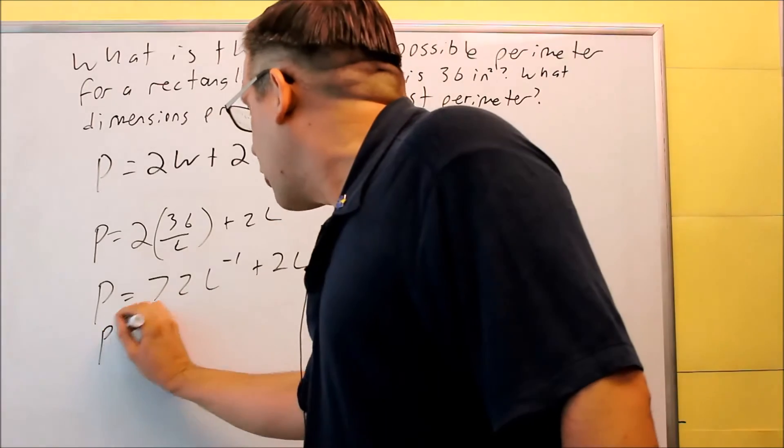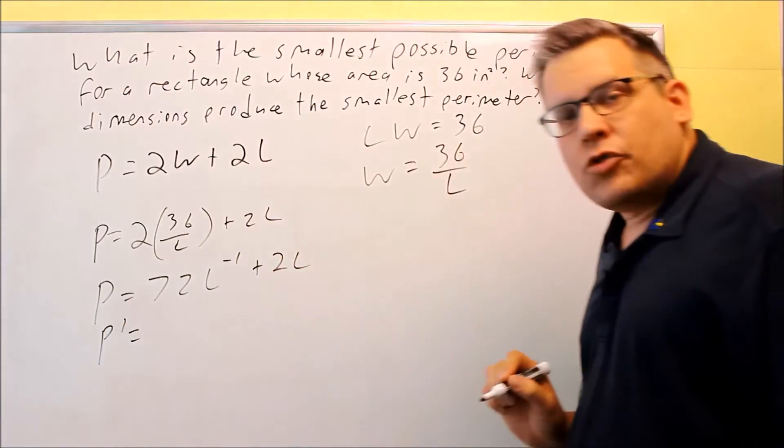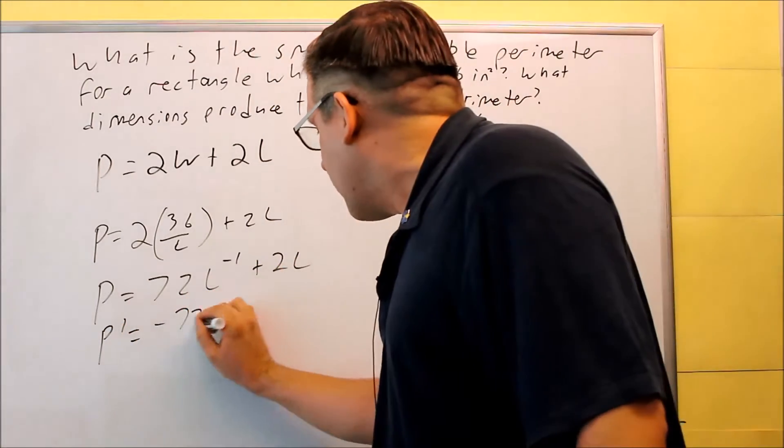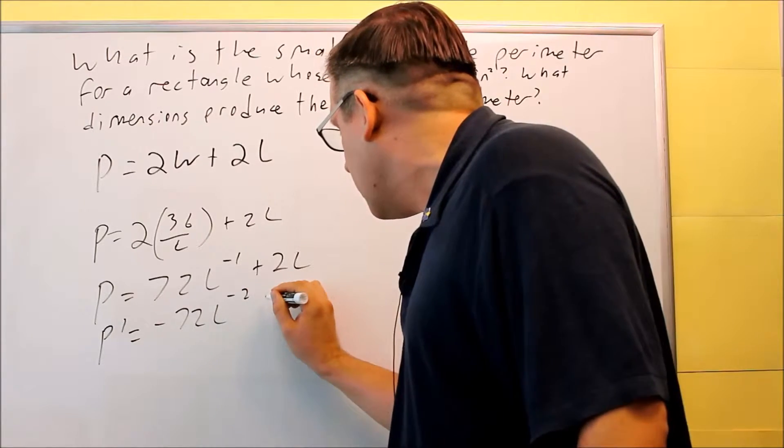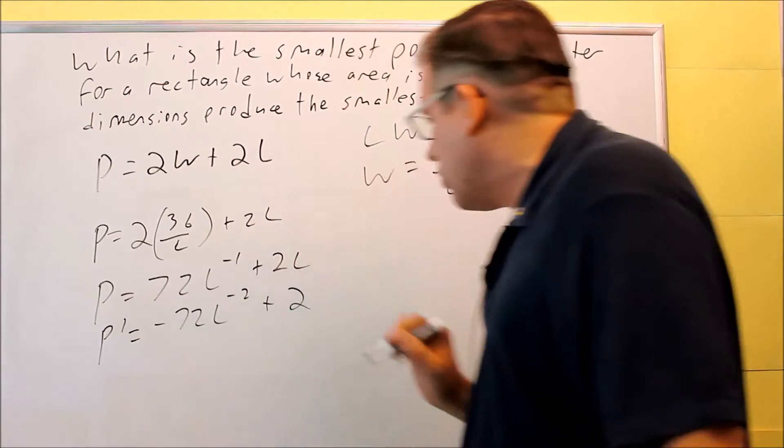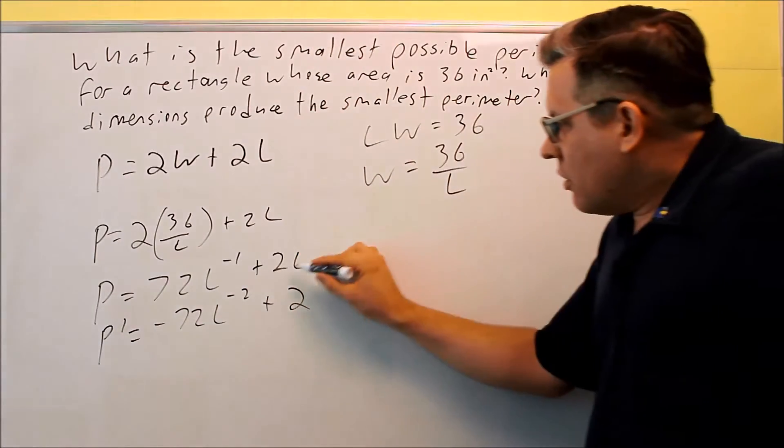Let's do the derivative. So P' = -72L^-2 + 2. Using the power rule, negative one comes down, derivative of L is just one there.